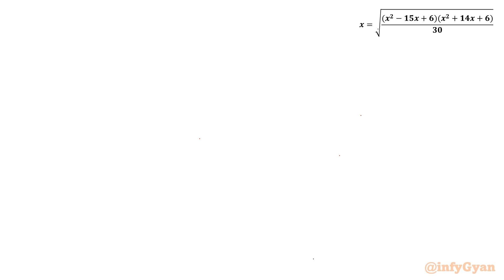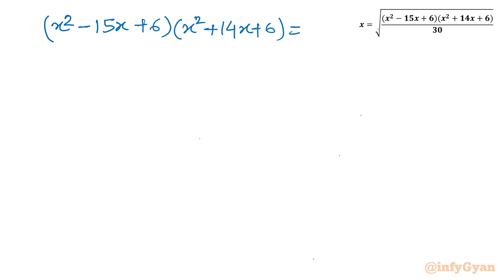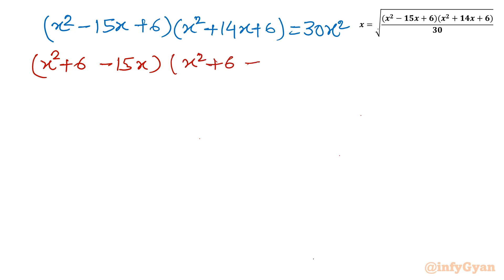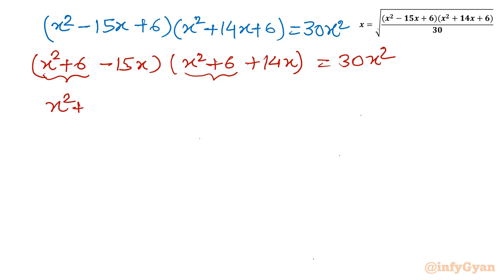Now let us begin the solving procedure. I will square both sides, giving x² = (x² − 15x + 6)(x² + 14x + 6) over 30. So we get 30x² equals the product of the two brackets. I'll expand the product by writing (x² + 6)².